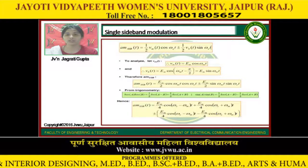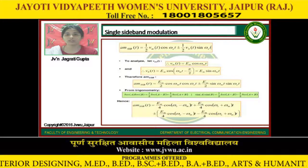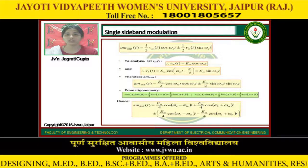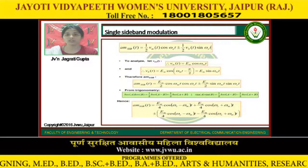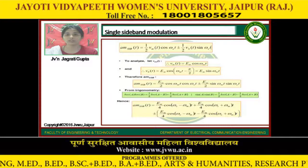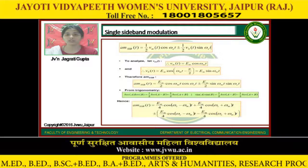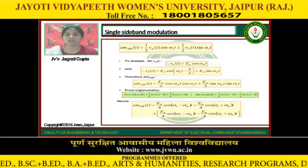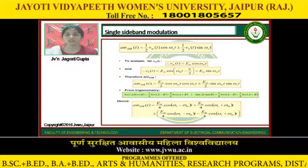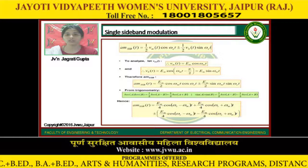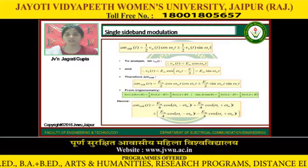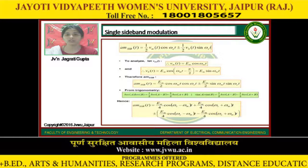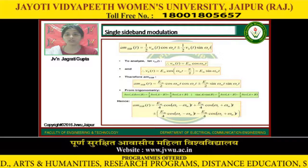For the SSB modulation technique, the amplitude of the SSB signal is given by: AM_SSB(t) = (1/2)·Vm(t)·cos(ωc·t) ± (1/2)·V̂m(t)·sin(ωc·t). To analyze, we take Vm(t) = Em·cos(ωm·t) as an example. V̂m(t) can also be written as Em·sin(ωm·t). Therefore, AM_SSB(t) = (Em/2)·cos(ωm·t)·cos(ωc·t) ± (Em/2)·sin(ωm·t)·sin(ωc·t). Applying the trigonometric product-to-sum identities to this expression, we obtain the final equation for the SSB signal.